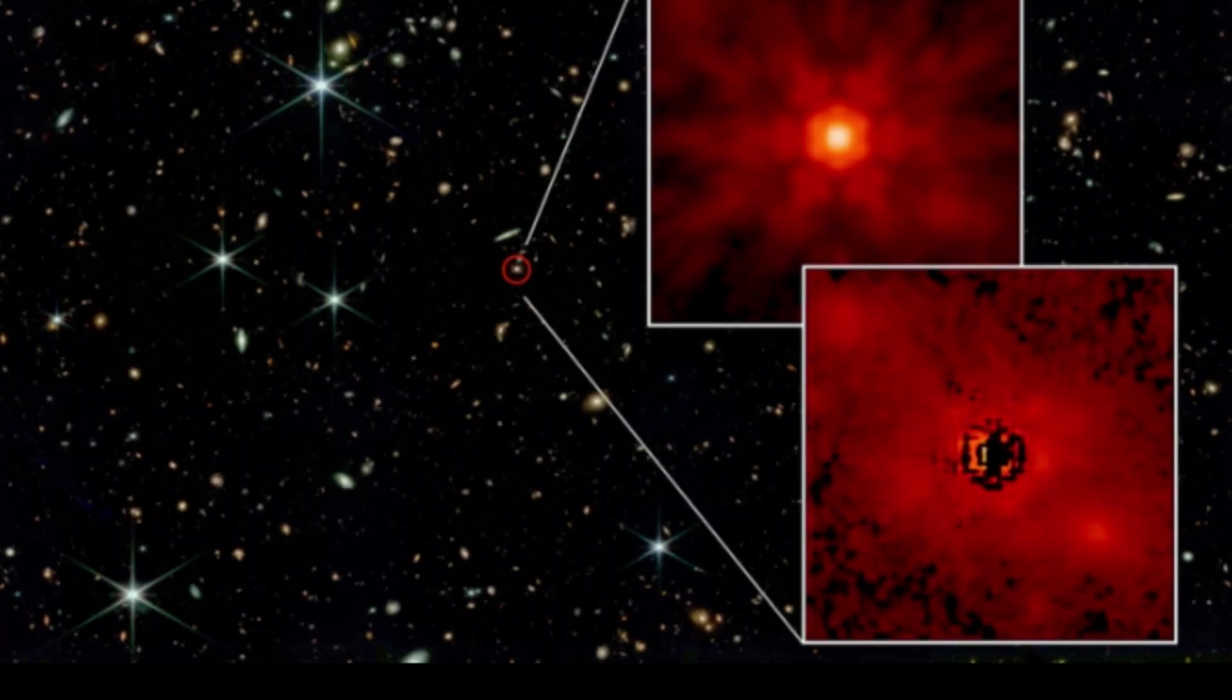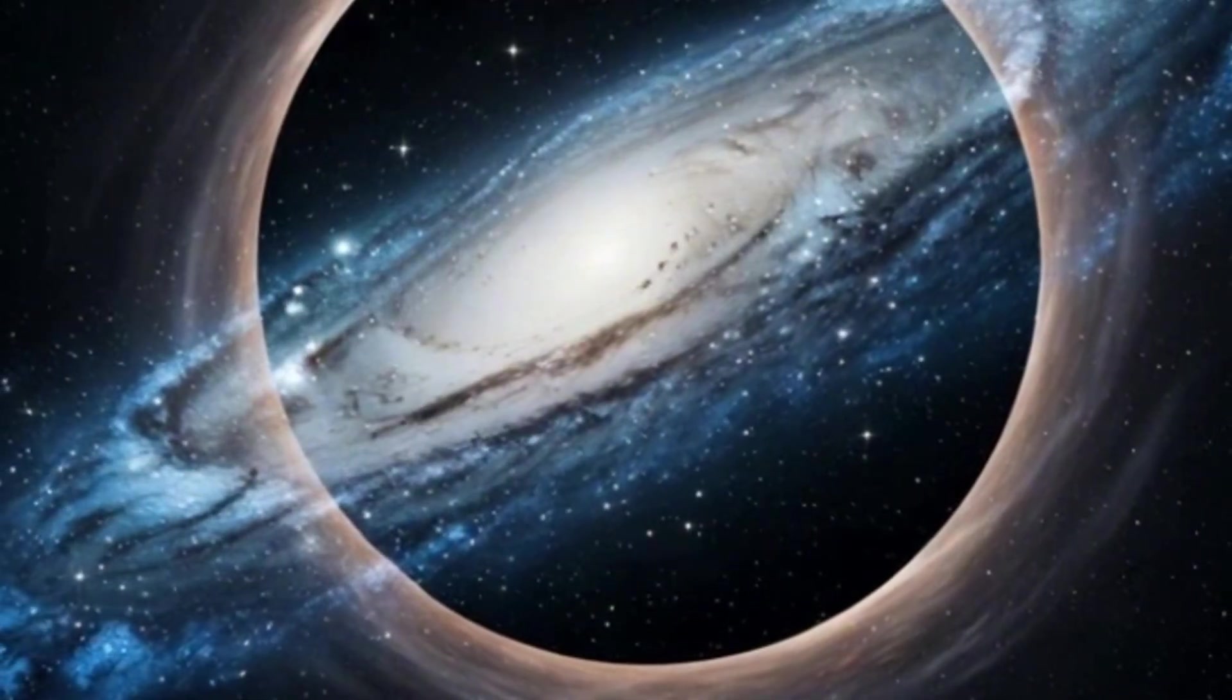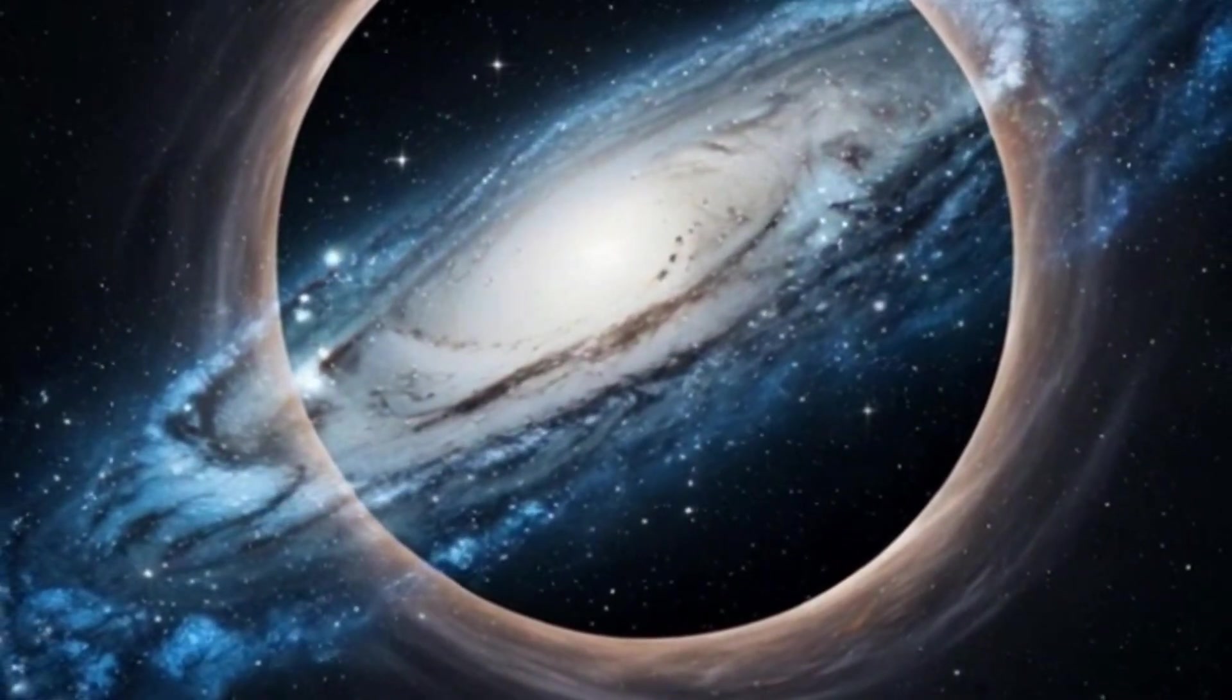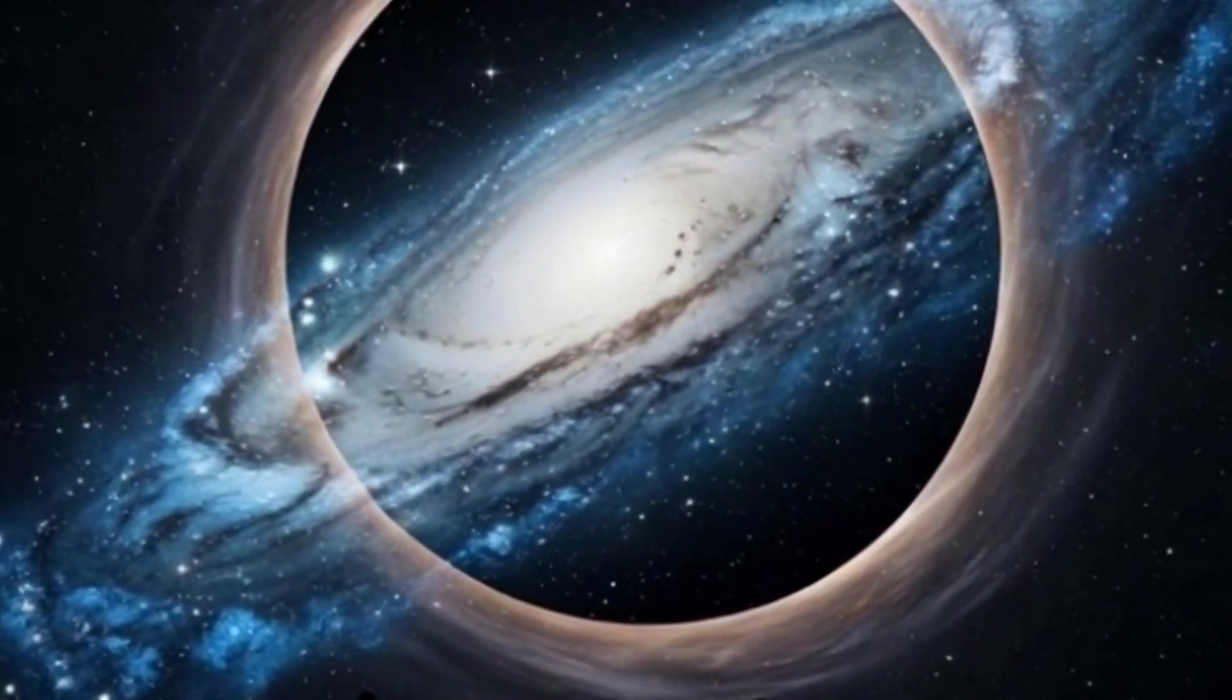And here's where it gets really exciting. Their model predicts that ancient relics — primordial black holes or neutron stars that survived the bounce — could still exist in our universe. Discovering them, especially in the early cosmos, would strongly support this bold idea.